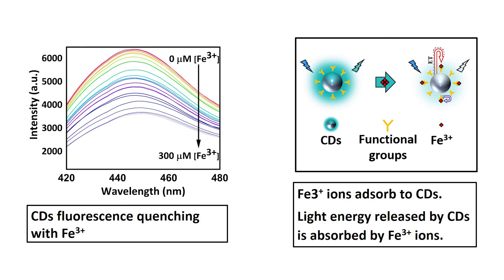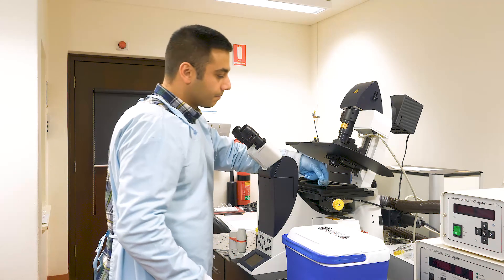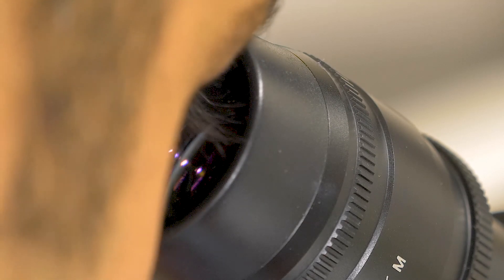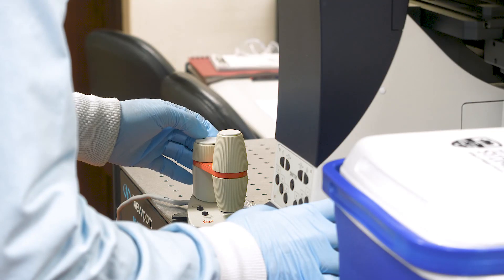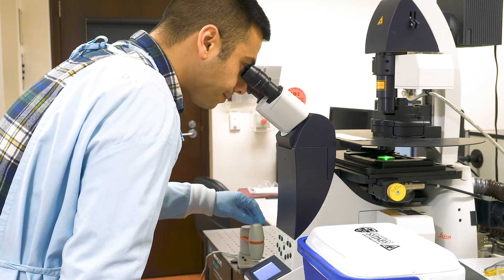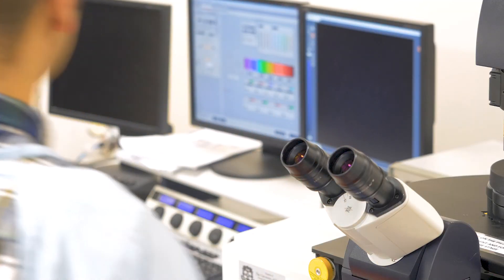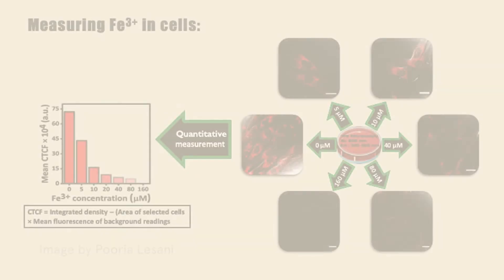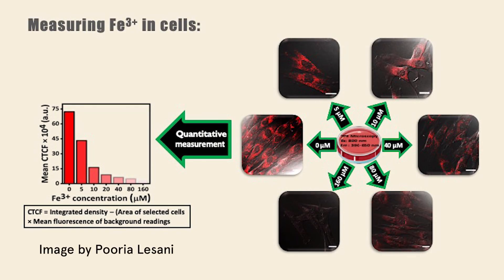Therefore, taking advantage of our carbon quantum dots' sensitivity to ferric ions, we can use them to sense ferric ion concentration in the cells. Now our samples are ready to investigate this ability. Similar to the cell imaging process before, we put all the dishes on the microscope separately and image the cells containing carbon quantum dots with different concentrations of ferric ions. I have finished capturing images of all our samples and put them all together in this slide.